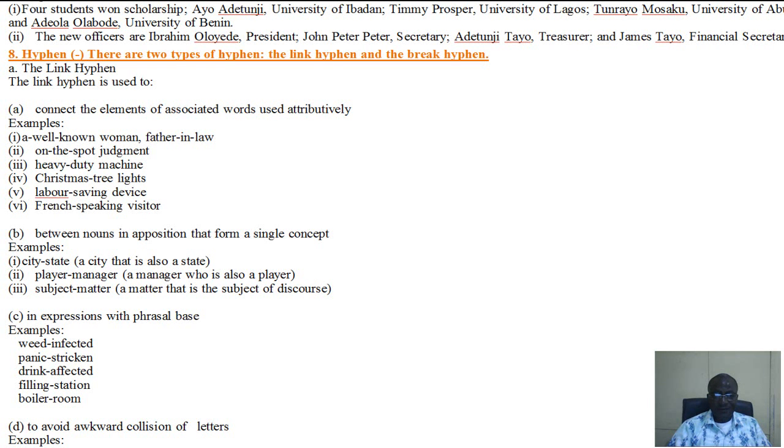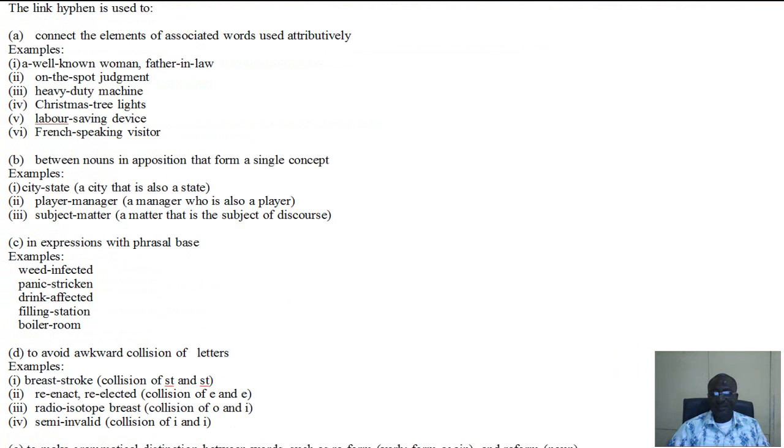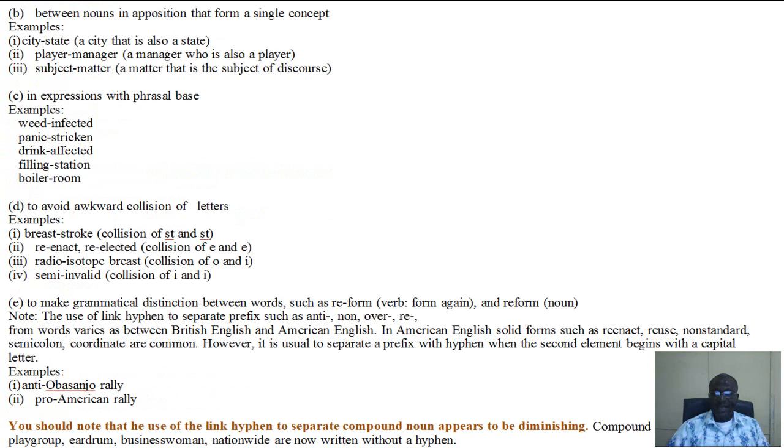The second use of the link hyphen is that it usually comes between nouns in apposition that form a single concept. Example: city-state. This describes a city that is also a state. Player-manager. This describes a manager who is also a player. The third use of the link hyphen is an expression with phrasal base. An example is weed-infected, drink-affected, filling-station, boiler-room.